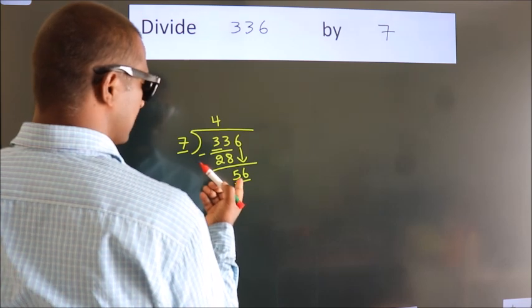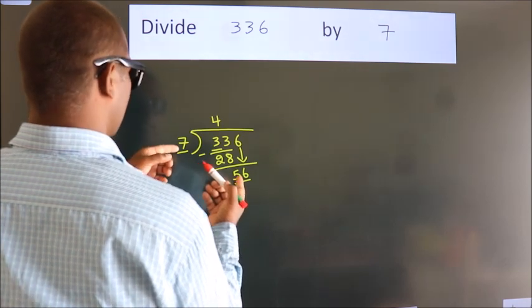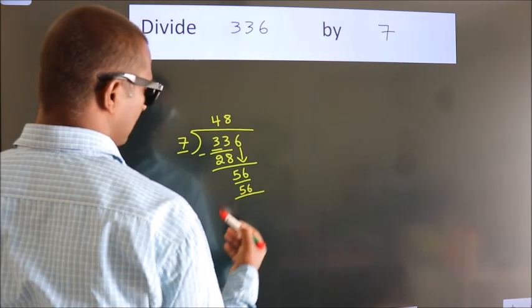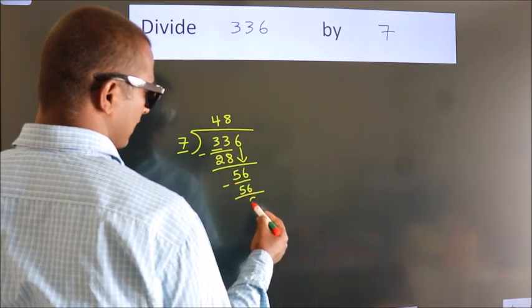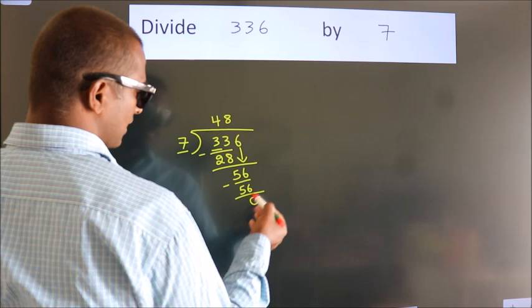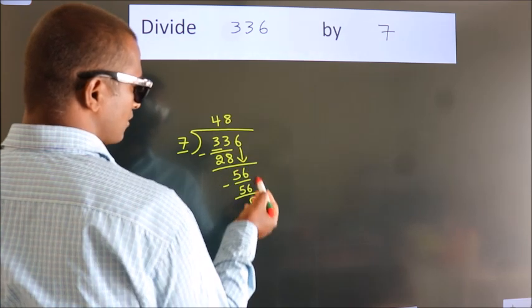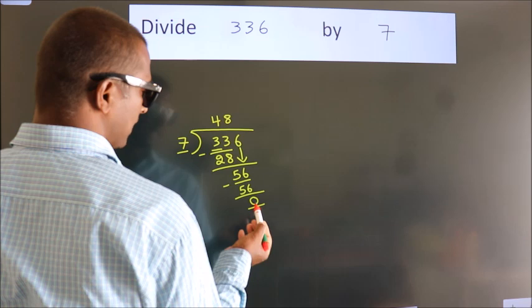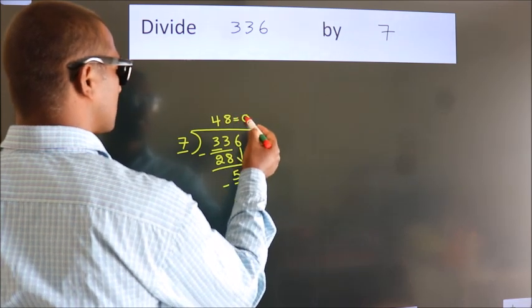When do we get 56? In 7 table. 7 eights 56. Now we subtract. We get 0. After this no more numbers to bring down and we got remainder 0. So this is our quotient.